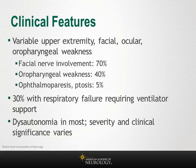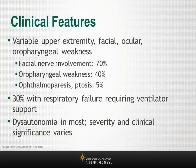Facial nerve involvement occurs in 70 percent of cases, and oropharyngeal or bulbar weakness with dysphagia in about 40 percent. Approximately 5 percent of patients may develop ophthalmoplegia, ptosis, or both, raising the differential diagnosis of botulism or myasthenia gravis. Hearing loss, papilledema, and vocal cord paralysis are less common.